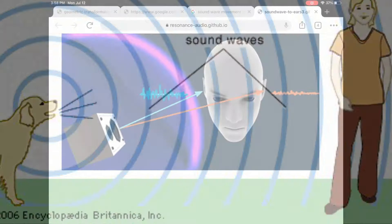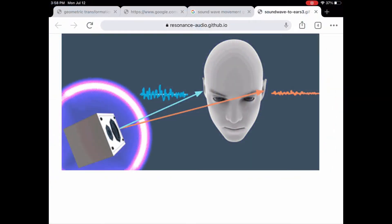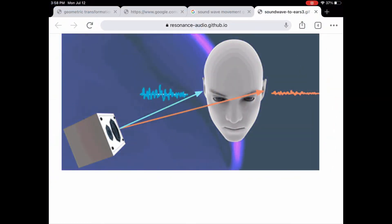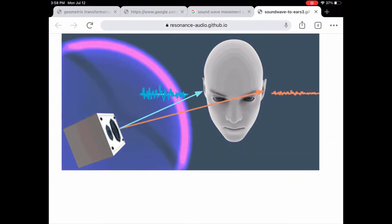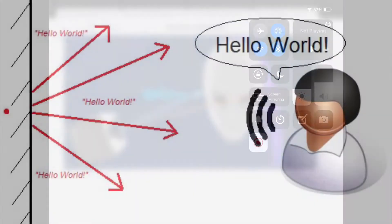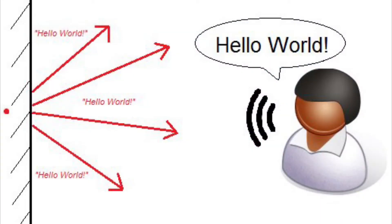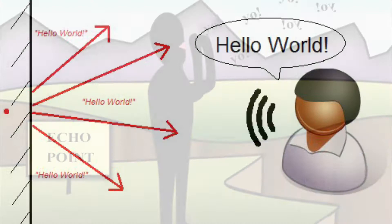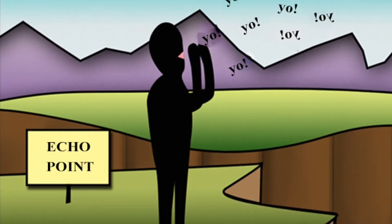Sound waves move like any other wave, away from their source of energy. You can hear this when you stand in a big empty room and shout really loudly. The sound you make will move from your mouth, hit the walls, and bounce around the room and back to you. You probably already know that's called an echo.